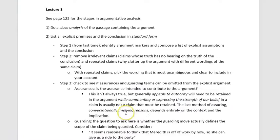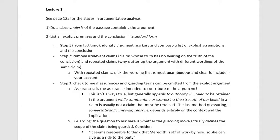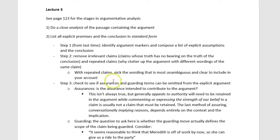We already talked about how you can use explicit argument markers to help figure out where inferences are taking place - to know when there's a conclusion and when there's a premise. We can't always count on them, but it's nice to look for argument markers first because those are unambiguous. The general rule of thumb is we always want to figure out what's explicit first and track that, and then go looking for what is implicit. That's going to be the procedure: explicit stuff first, then implicit stuff later.